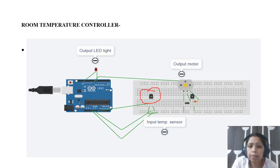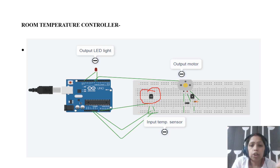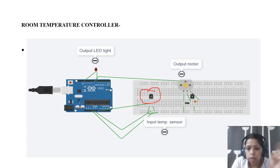At the same time the warning signal will be sent by the Arduino, so we have to turn on the AC. It is not required to turn on the fan or AC manually. The IoT system can automatically turn on the motor once the temperature reaches a certain level.